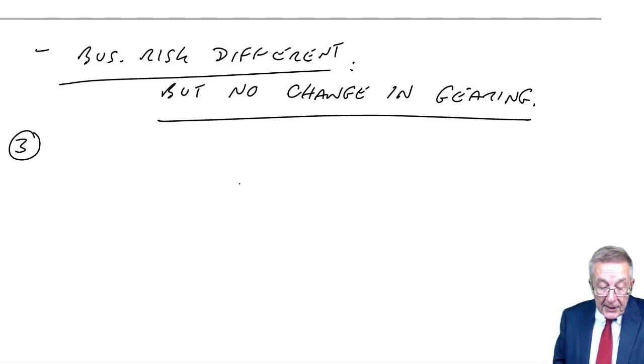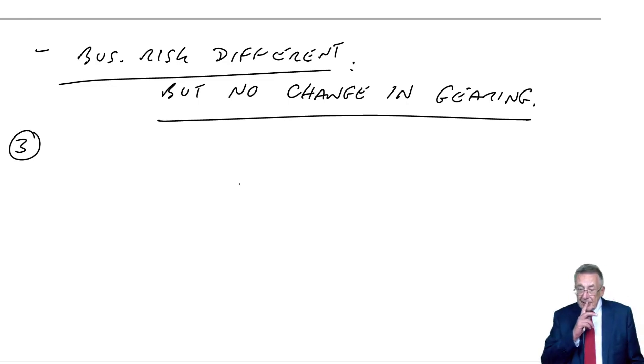APLC has a cost of debt of 7%. The market return is 15%. The risk-free rate is 8%. Before anybody shouts, how can the cost of debt be lower than the risk-free rate? Remember, the cost of debt is after tax relief. The return to investors will be more than 7%. It will be more than risk-free rate of 8%.